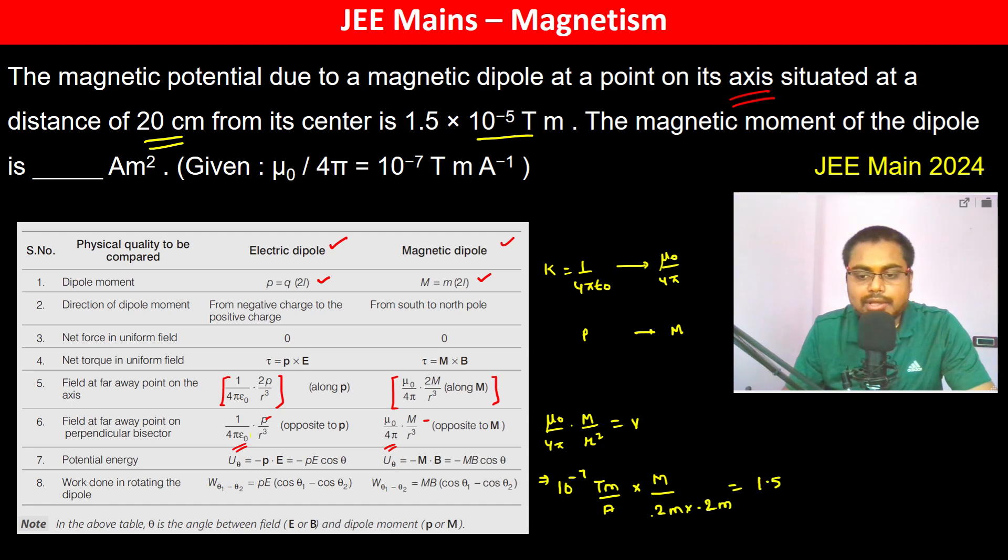This equals 1.5 × 10⁻⁵ tesla meter. Tesla and meter cancel out.